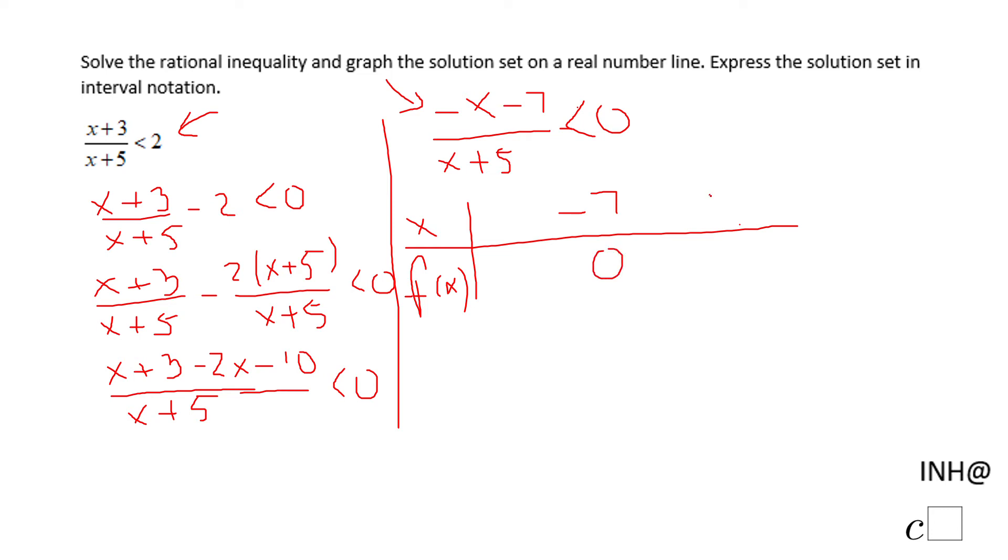If we use some value, if we use zero, we end up with negative one for the numerator and positive for the denominator, so we're going to have a negative outcome.